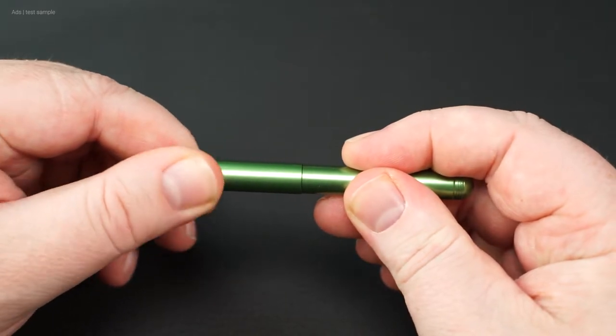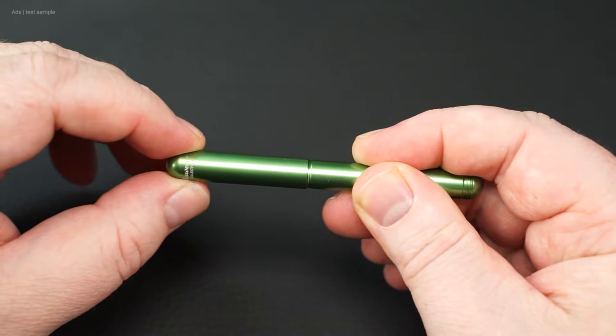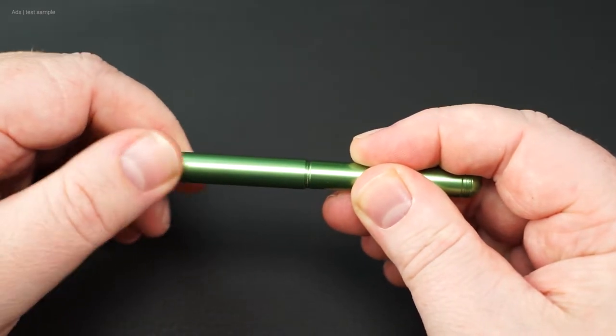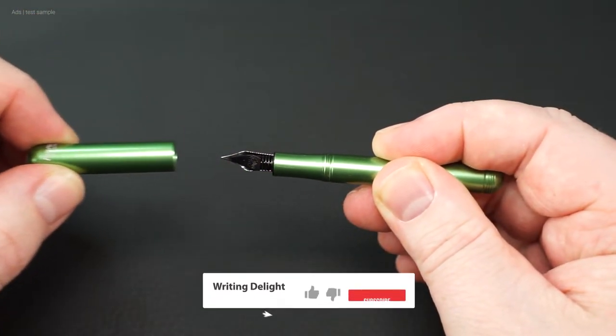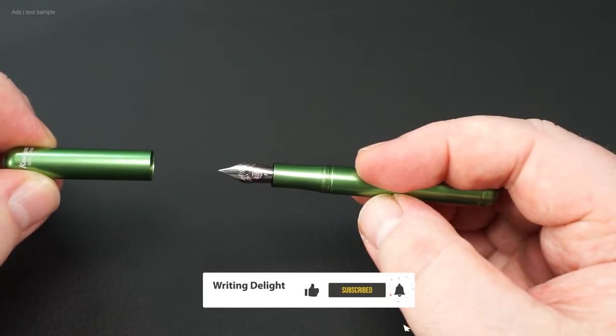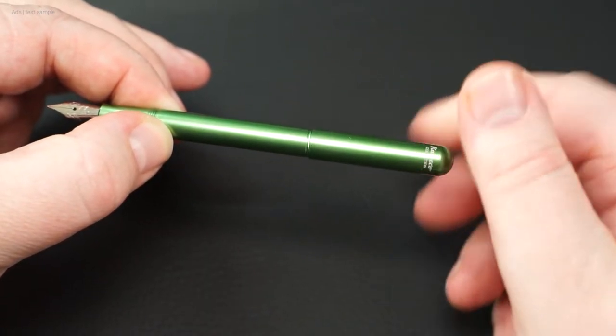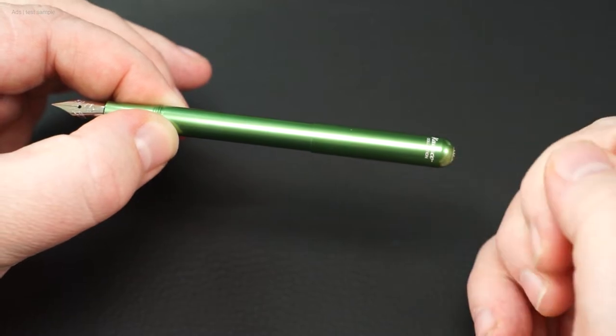The cap is screwed and can be opened with about three turns. Underneath we have the small metal grip section and the nib. The cap can then also be screwed onto the thread at the end of the shaft.